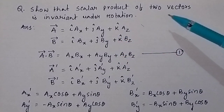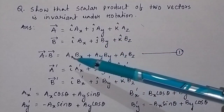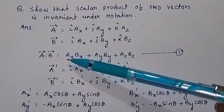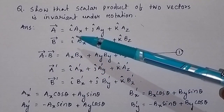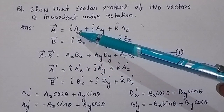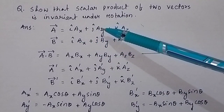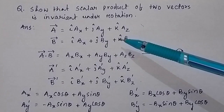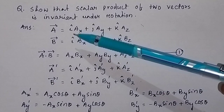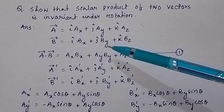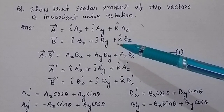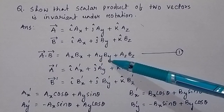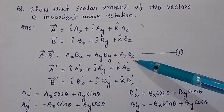So what will be the scalar product of the two vectors? The dot product A·B: only i·i equals 1, j·j equals 1, k·k equals 1, and other dot products such as i·j or i·k will be equal to zero. So A·B will be equal to AXBX plus AYBY plus AZBZ.